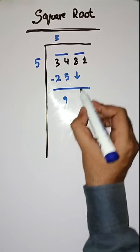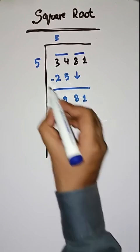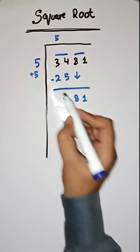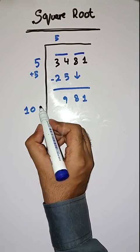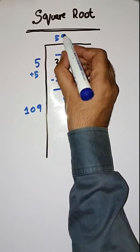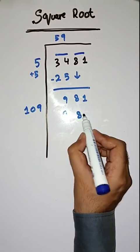Next pair 81, we will take this one. Here we will do 5 plus 5 which is equal to 10. Now we will take a number 9. 109 times 9 is 981.